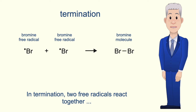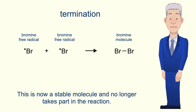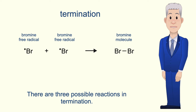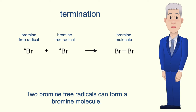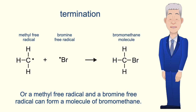In termination, two free radicals react together to form a molecule with no unpaired electrons. This is now a stable molecule and no longer takes part in the reaction. There are three possible reactions in termination: two bromine free radicals can form a bromine molecule; two methyl free radicals can form a molecule of ethane; or a methyl free radical and a bromine free radical can form a molecule of bromomethane.